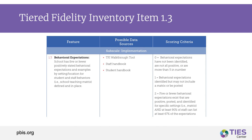The Tiered Fidelity Inventory, also known as the TFI, is a checklist of items related to full implementation of school-wide PBIS. The image on the screen shows item 1.3 of the TFI — Behavioral Expectations: School has five or fewer positively stated behavioral expectations and examples by setting location for student and staff behaviors, i.e., school teaching matrix, defined and in place. Possible data sources include the TFI walkthrough tool, staff handbook, and student handbook. Scoring criteria: 0 — behavioral expectations have not been identified; 1 — behavioral expectations are identified but may not include a matrix or be posted; and 2 — five or fewer behavioral expectations exist that are positive, posted, and identified for specific settings, and at least 90% of staff can list at least 67% of the expectations.